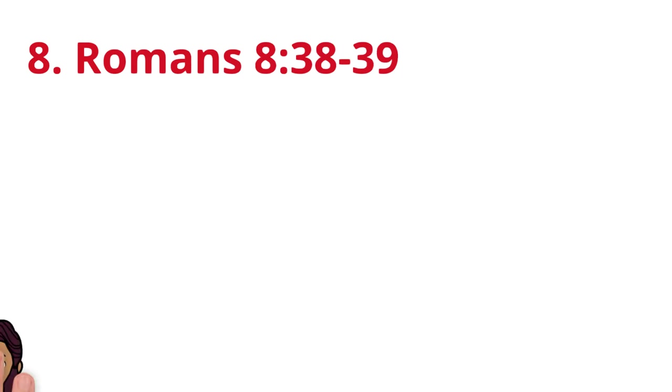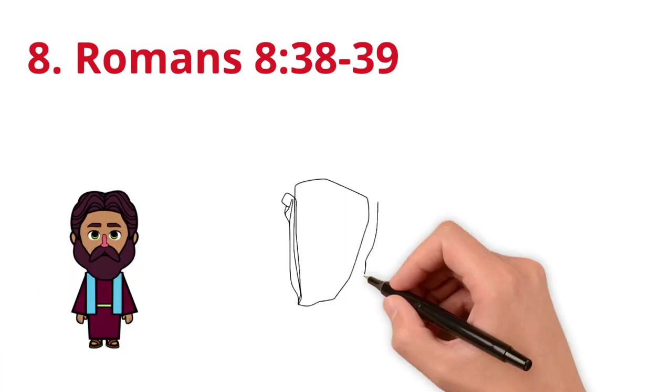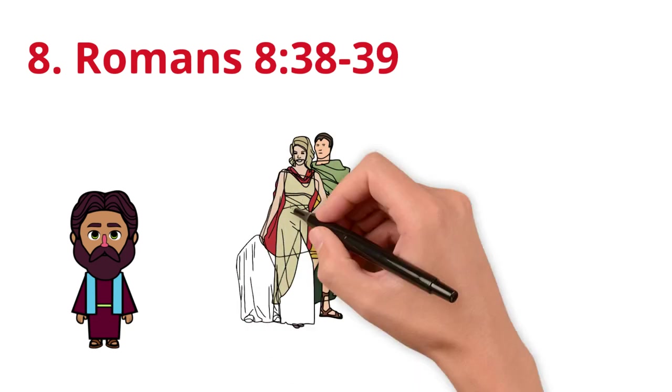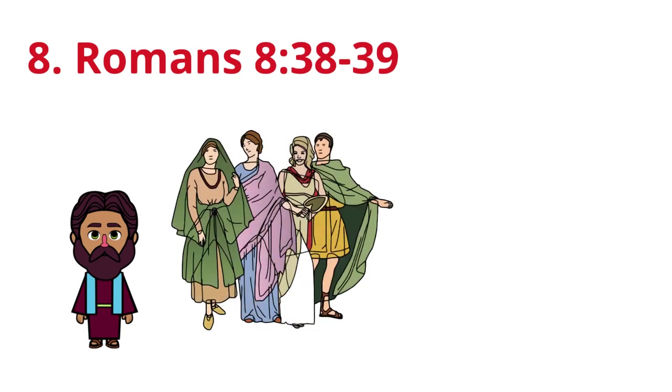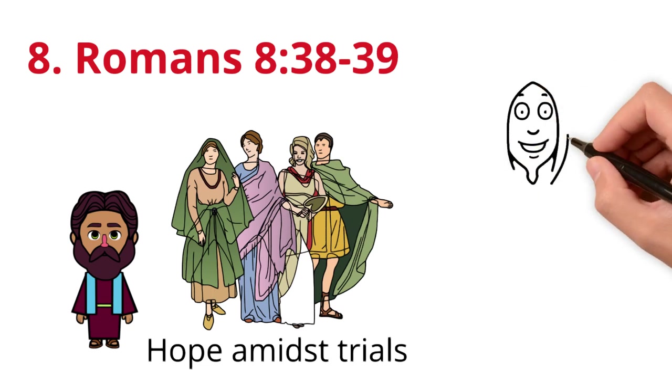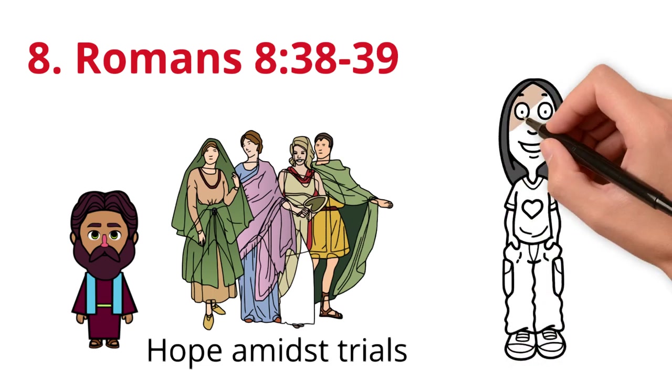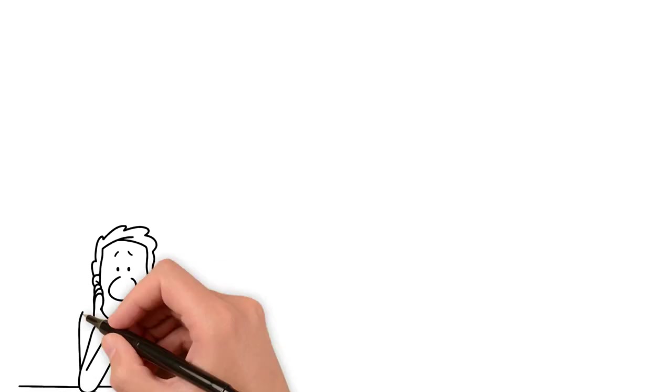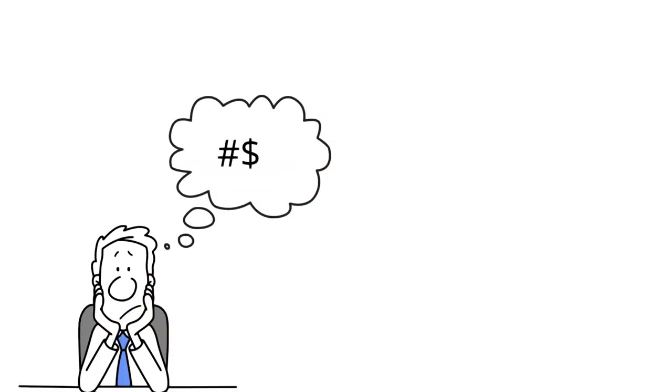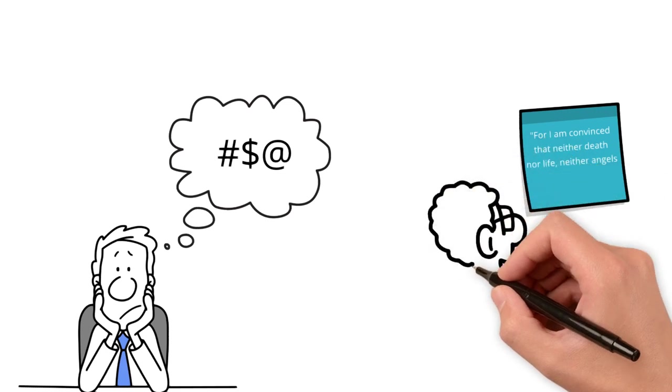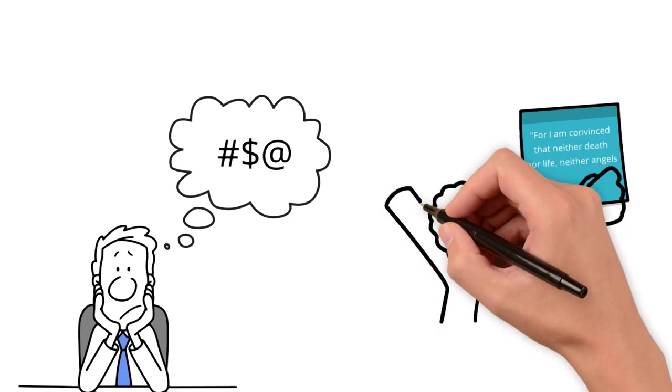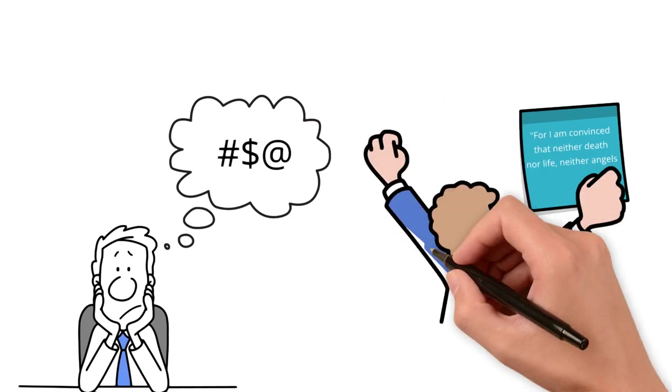Context: Paul reassures believers in Rome that nothing can separate them from God's love, offering them hope amidst trials. Tip: Remind yourself that God's love is constant no matter your circumstances. Real life example: When negative thoughts creep in, counter them by affirming that God's love for you is unchanging. Write this passage down and keep it somewhere visible as a daily reminder. Maybe even the background of your phone.